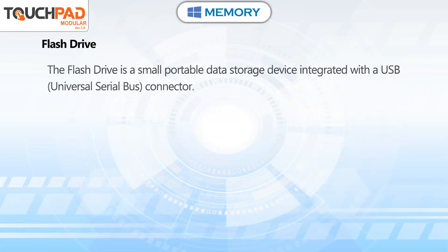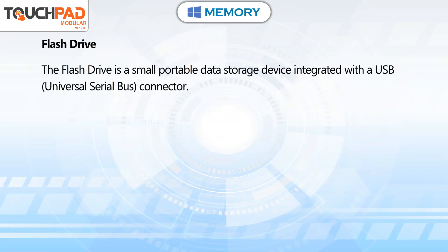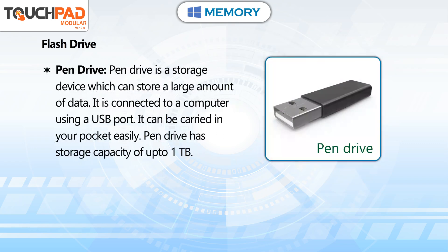Flash drive. The flash drive is a small portable data storage device integrated with a USB (Universal Serial Bus) connector. Pen drive: a pen drive is a storage device which can store a large amount of data. It is connected to a computer using a USB port, can be carried in your pocket easily, and has a storage capacity of up to 1 TB.